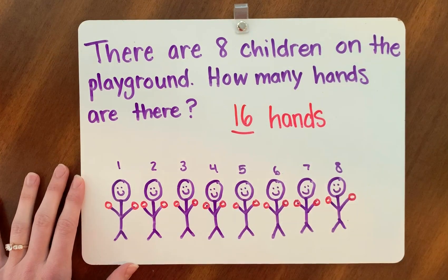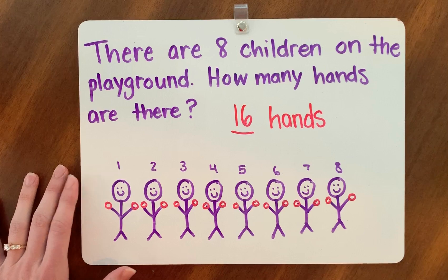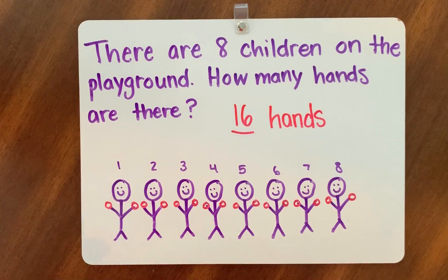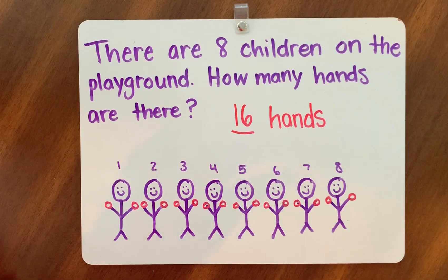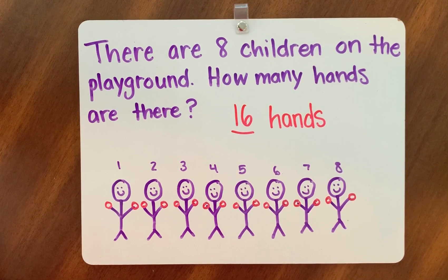There are two hands on each child — 16 hands in all. Now, that's not the only way I can solve this problem. Another thing I can do that's actually a lot faster than drawing all of those hands and counting all of them is I can skip count by two. I know that each person has two hands, so I'm counting by groups of two.